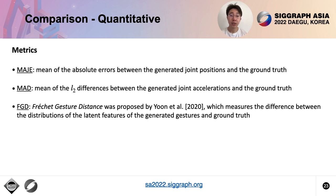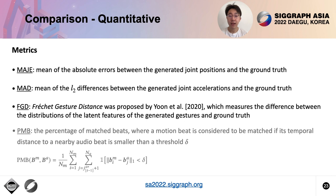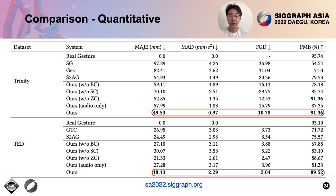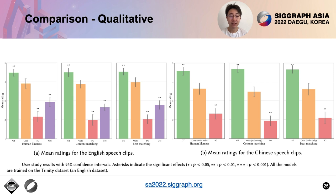For objective evaluation, we adopt three commonly used metrics: MAJE, MAD, and FGD. Moreover, we also propose a new metric to evaluate rhythmic performance, which is PMB, the percentage of matched beats. As shown in this table, our system achieves the best performance on all metrics. We further conduct user studies. Our system receives higher scores than other systems, shown in orange, and is closer to the ground truth, shown in green.